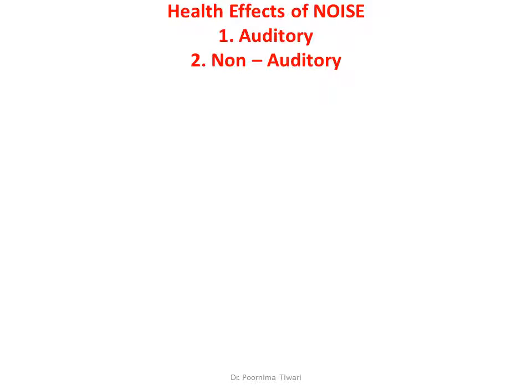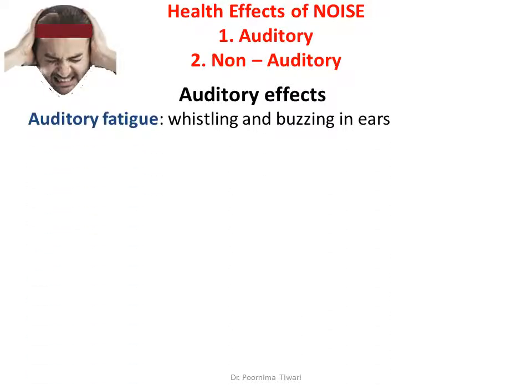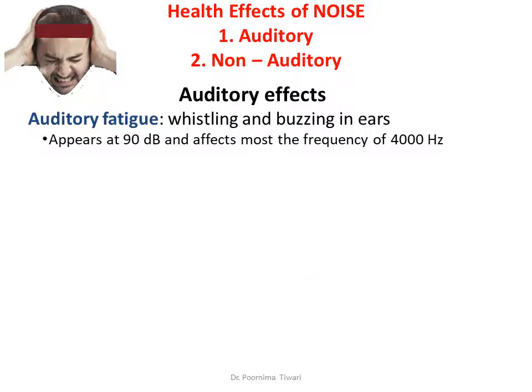Health effects of exposure to noise can be both auditory — affecting the hearing and the ear — and non-auditory, affecting other systems of the body. Auditory effects include auditory fatigue, with whistling and buzzing sounds in the ear that come from nowhere. This appears when exposure is around 90 decibels and affects mostly the frequency of 4,000 Hz — both the sounds heard and the hearing loss occur in this frequency range.